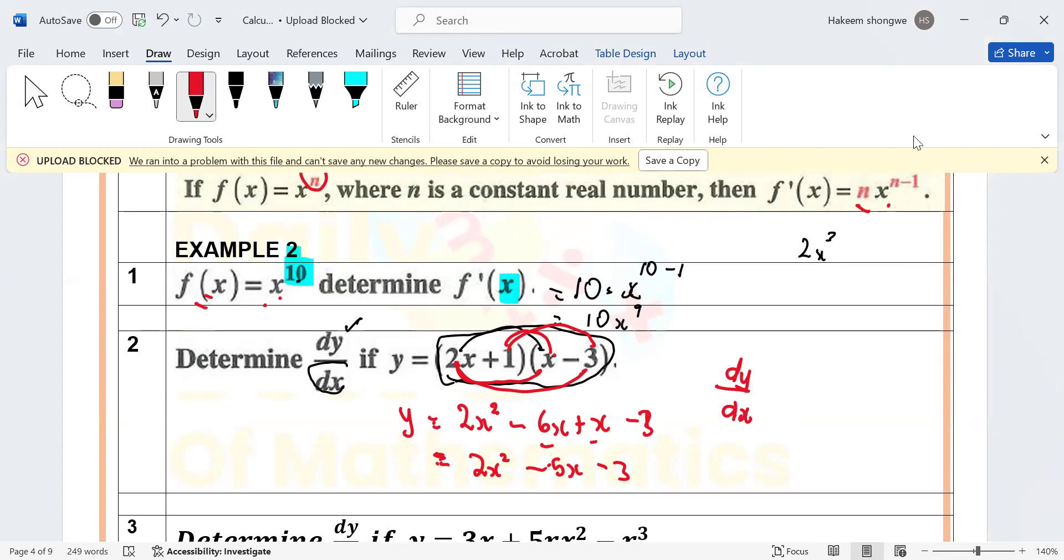Then I'm going to apply the power rule. What does the power rule say? I am going to have this exponent. What is the exponent here of x? It's 2. What is the exponent of x here? This one here doesn't have x, so this one is a constant.